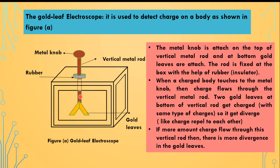In the gold leaf electroscope, there is a vertical metal rod placed on an insulating material such as rubber, so that charge cannot transfer to the insulating material. This vertical metal rod has a knob at the top, and at the bottom there are gold leaves attached. When a charged rod is brought into contact with the metal knob, the charge flows through the rod and both gold leaves acquire the same type of charge, so they get repelled from each other.